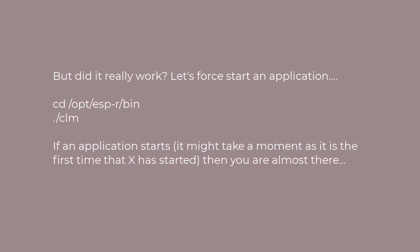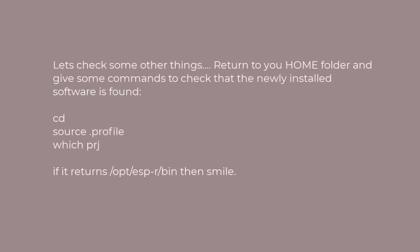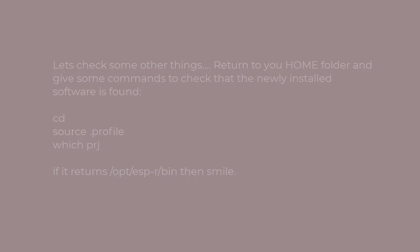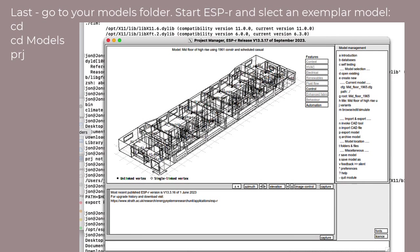Our next step is to go back to the home folder and give a couple of commands to make sure we can normally and easily run the ESPR modules. cd to get back to home, then run source .profile to re-establish the paths, and then say which proj. We ought to get something back, and if so we can smile. Let's go into our models folder and issue the proj command. That should start up an application and suggest that you go into open existing, pick an exemplar, and let it load. It will copy the file and then restart the project manager focused on that model.